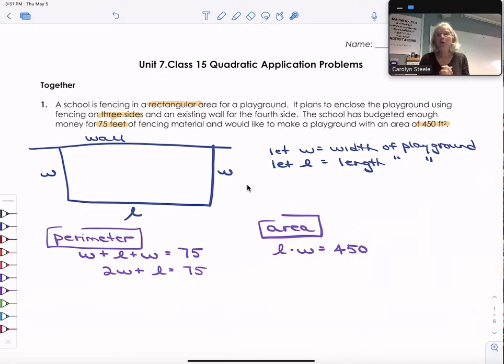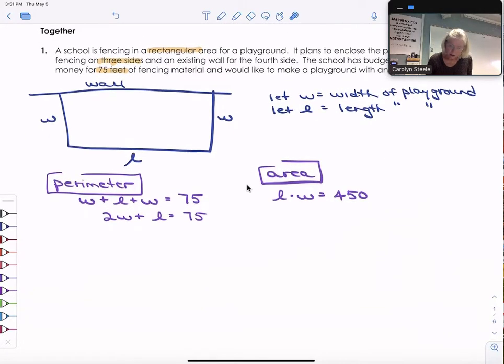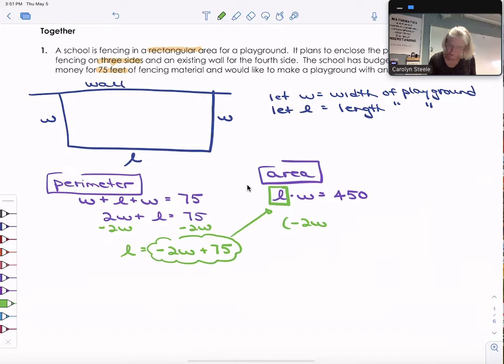Now one strategy I have for systems of equations is I can use substitution. And that's what I'm going to do here. What I'm going to do is come and isolate L. I'm going to get L all by itself. And to do that I'm going to subtract 2W from both sides. And I know that L is equal to negative 2W plus 75. And I isolated L because it was the easiest thing to do. And what I can do now is I can come up to the L in my area equation and substitute in this equivalent expression instead.